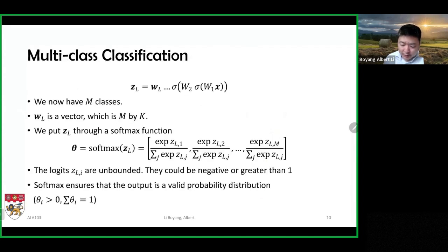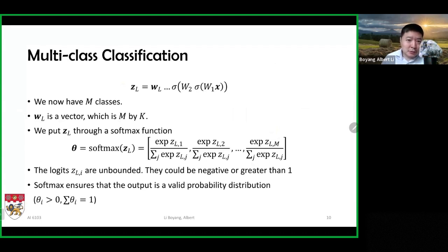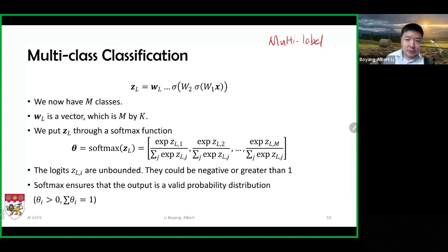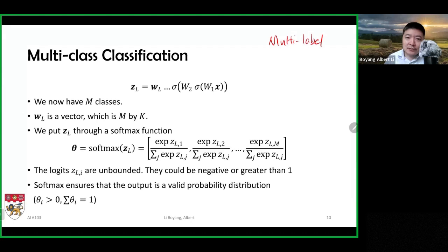Now, multi-class classification. We talked about binary classification with logistic regression, but it's common to have multiple classes to choose from. Note that multi-class classification is not the same as multi-label classification. In multi-class classification, there is only one true answer per input. In multi-label classification, there could be multiple correct labels per input. What they share is that there are more than two choices.